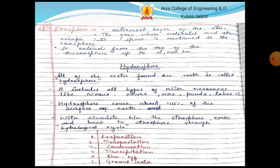Next is hydrosphere. All of the water found on the Earth is called the hydrosphere. It includes all types of water resources like oceans, rivers, seas, ponds, lakes, etc. The hydrosphere covers about 70% of the surface of Earth. Water circulates between the atmosphere, Earth, and back to the atmosphere through the hydrological cycle. In the hydrological cycle, we discuss evaporation, transportation, condensation, precipitation, runoff, and groundwater.